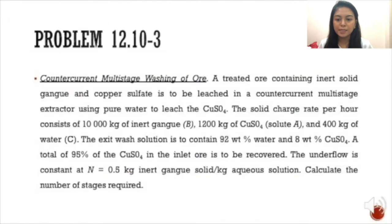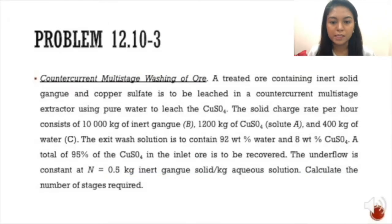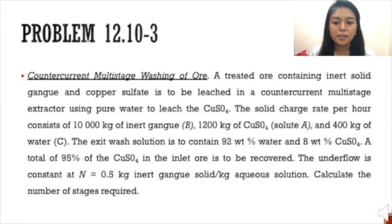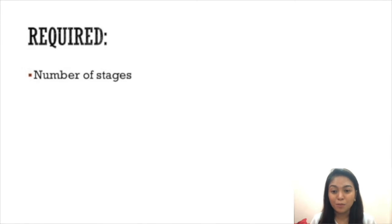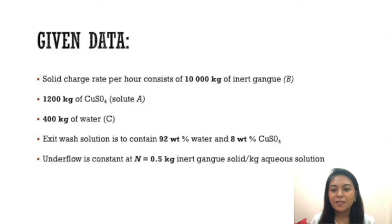Now we go to problem 12.10: Counter current multi-stage washing of ore. Created ore containing inert solid gang and copper sulfate is to be leached in a counter current multi-stage extractor using pure water. The solid charge rate per hour consists of 10,000 kilograms of inert gang B, 1,200 kilograms of copper sulfate (solute A), and 400 kilograms of water C. The exit wash solution is to contain 92 weight percent water and 8 weight percent copper sulfate. A total of 95 percent of the copper sulfate is to be recovered. The underflow is constant at N equals 0.5 kilograms of inert gang solid per kilogram aqueous solution. Required is to calculate the number of stages.